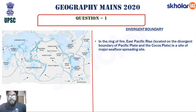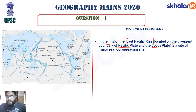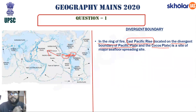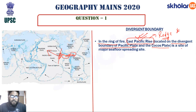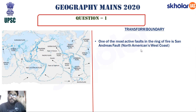For divergent boundary: in the Ring of Fire, the East Pacific Rise is located on the divergent boundary between the Pacific plate and the Cocos plate. As the Pacific plate and the Cocos plate move apart, we see sea floor spreading, resulting in the East Pacific Rise — a mid-oceanic ridge. This is a site of major sea floor spreading.